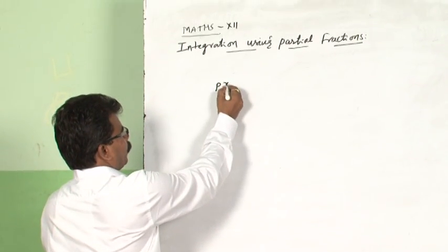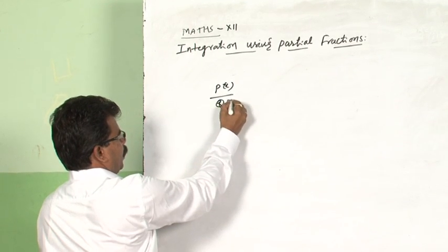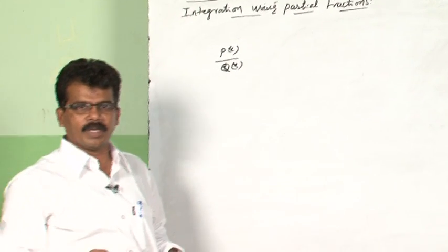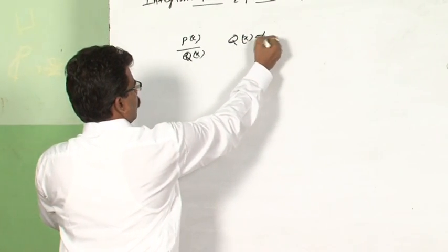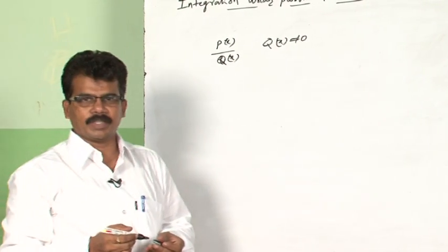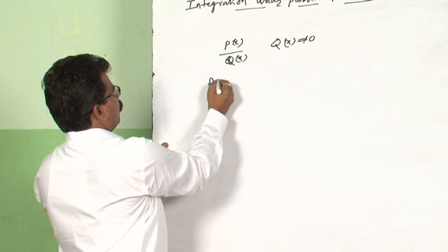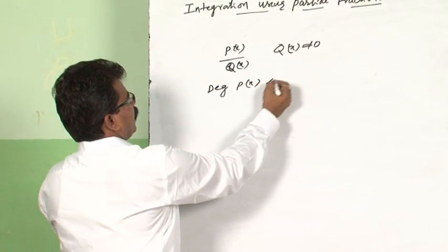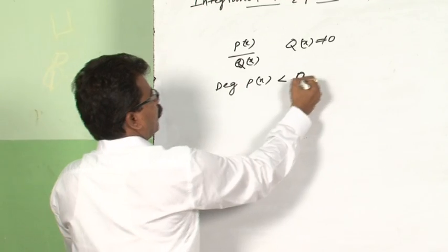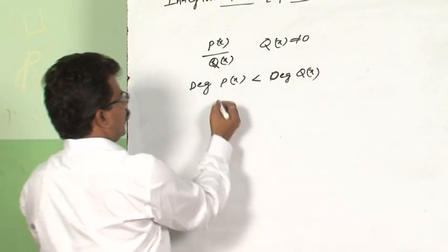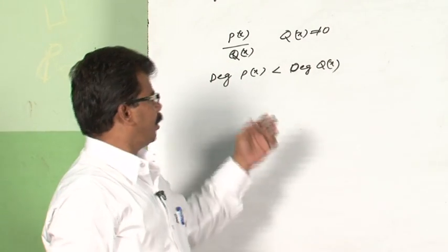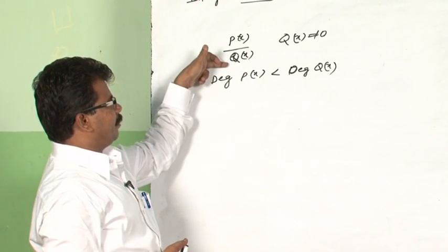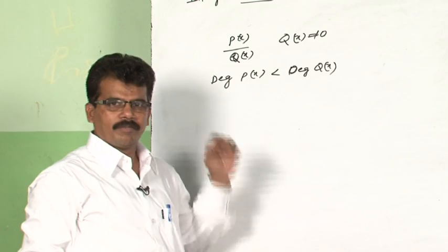What is a rational function? A function of the form p(x) divided by q(x), where p(x) and q(x) are polynomials and the denominator q(x) is not equal to zero, is called a rational function. Also, if the degree of polynomial p(x) is less than the degree of polynomial q(x), then we say it is a proper rational function.